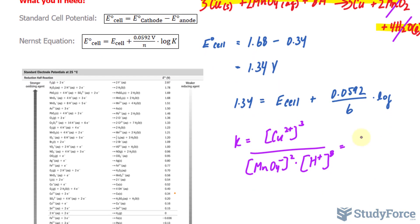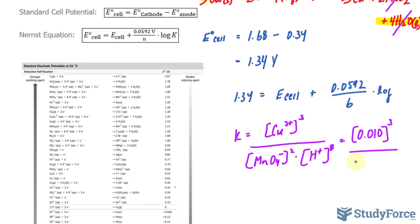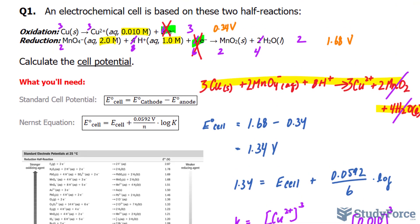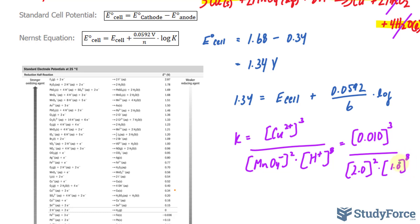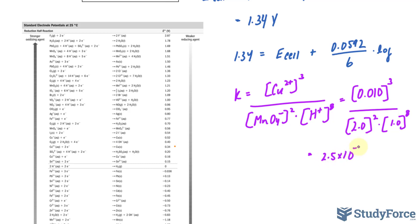I'm going to substitute the concentrations they gave us at the beginning. So, 0.010 raised to the power of 3, over MnO₄⁻'s concentration, which is 2.0 raised to the power of 2, multiplied to the concentration of H⁺, which is 1.0 raised to the power of 8. Given that the base is 1, anything that you raise it to will still be 1. I'll use my calculator. 0.010 raised to the power of 3, divided by 2.0 raised to the power of 2 times 1, will give you this. And we want this to two significant figures. We'll write down 2.5 times 10 to the power of negative 7.